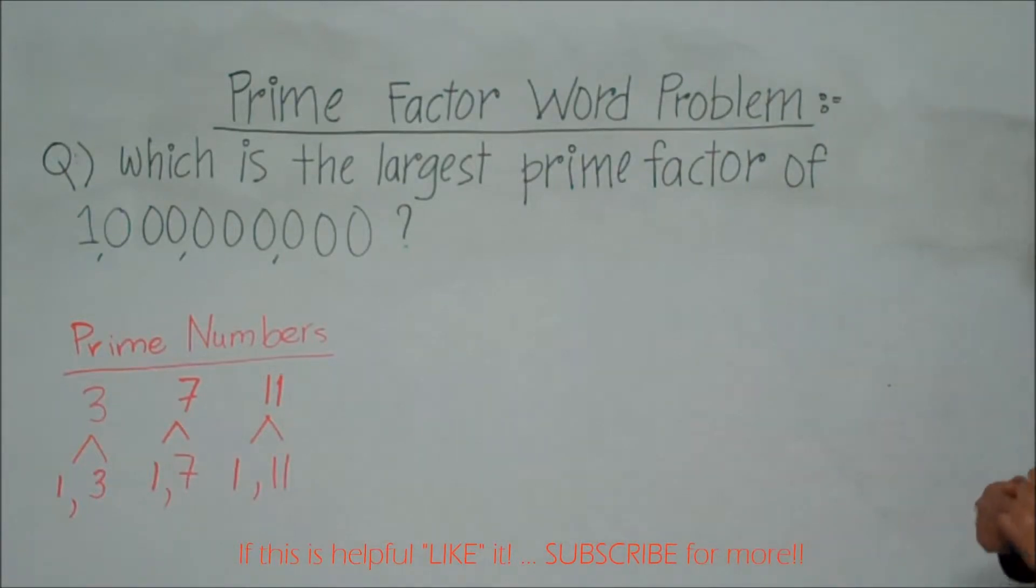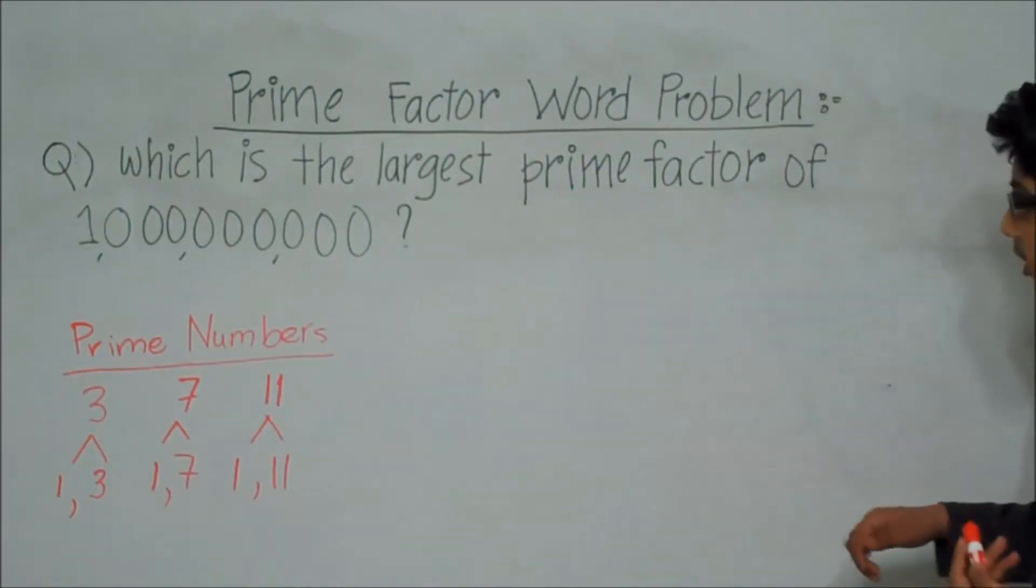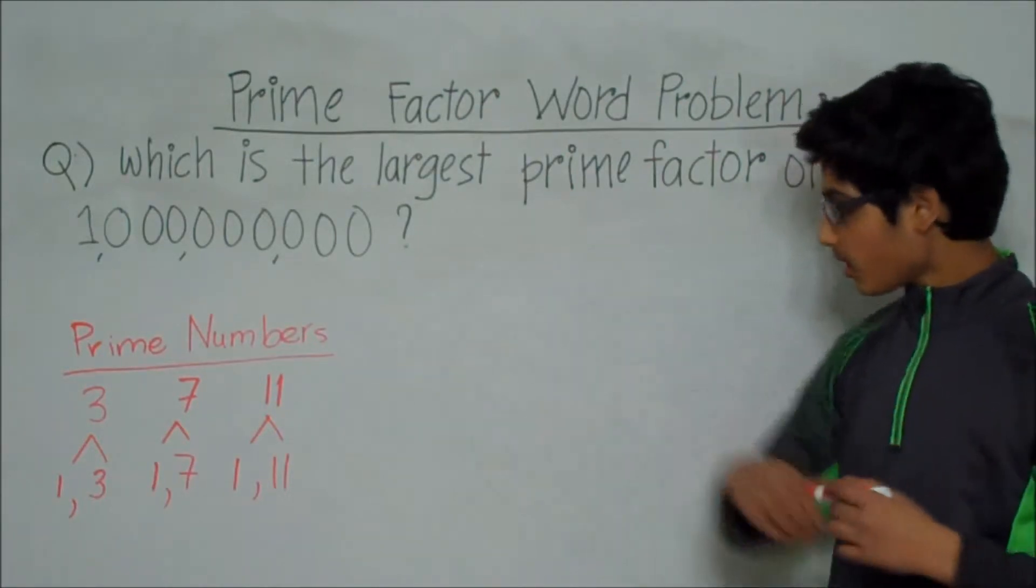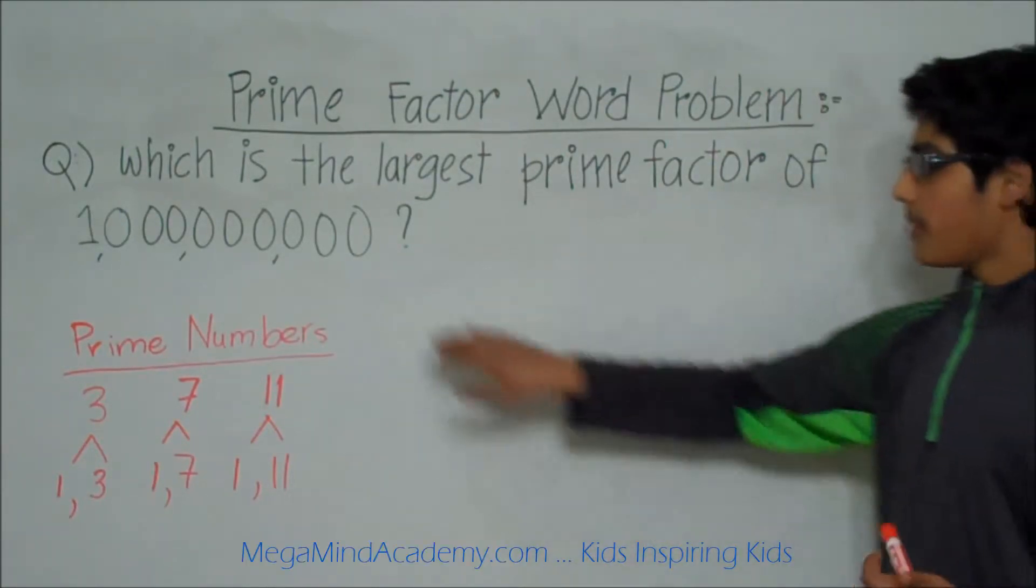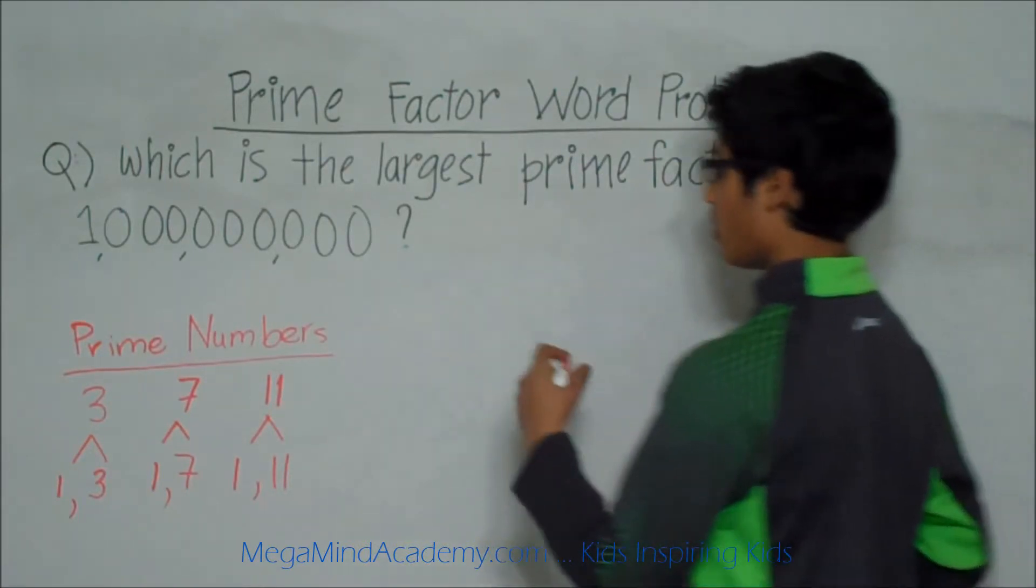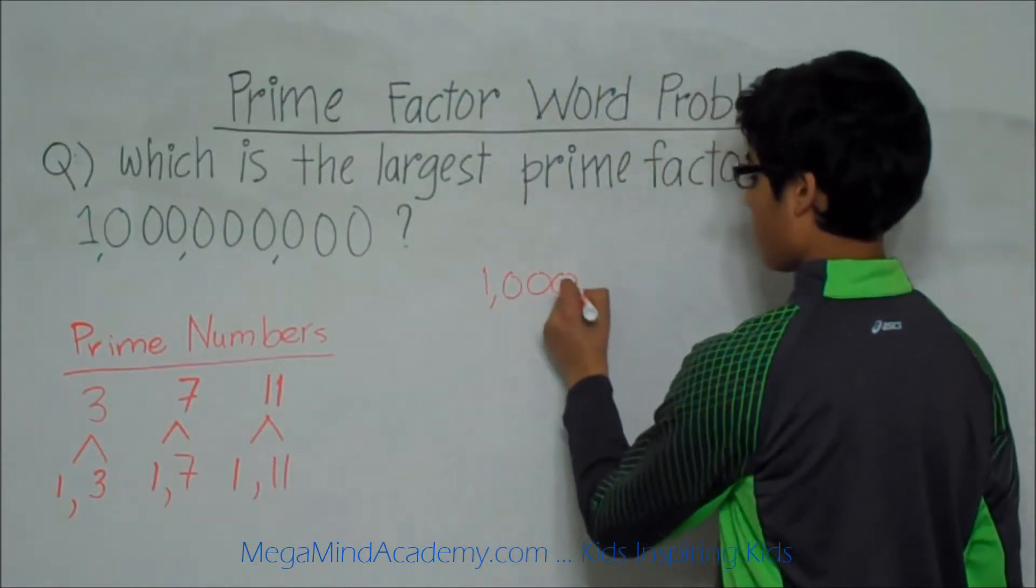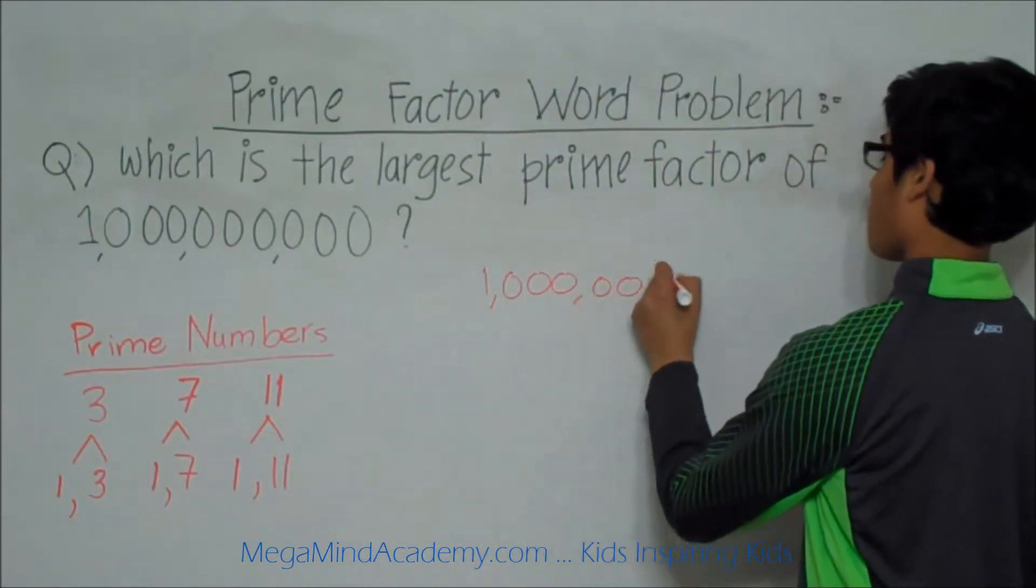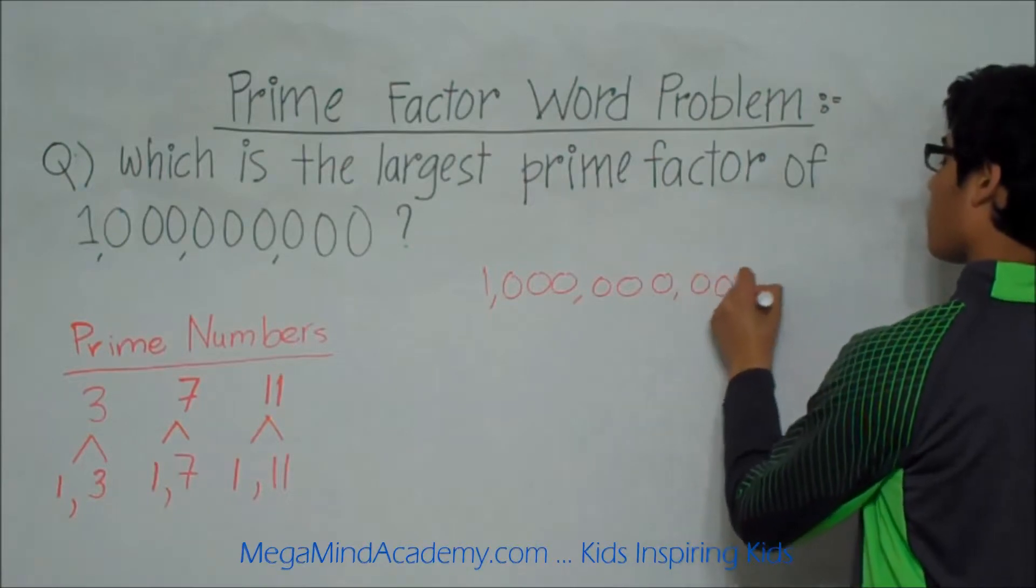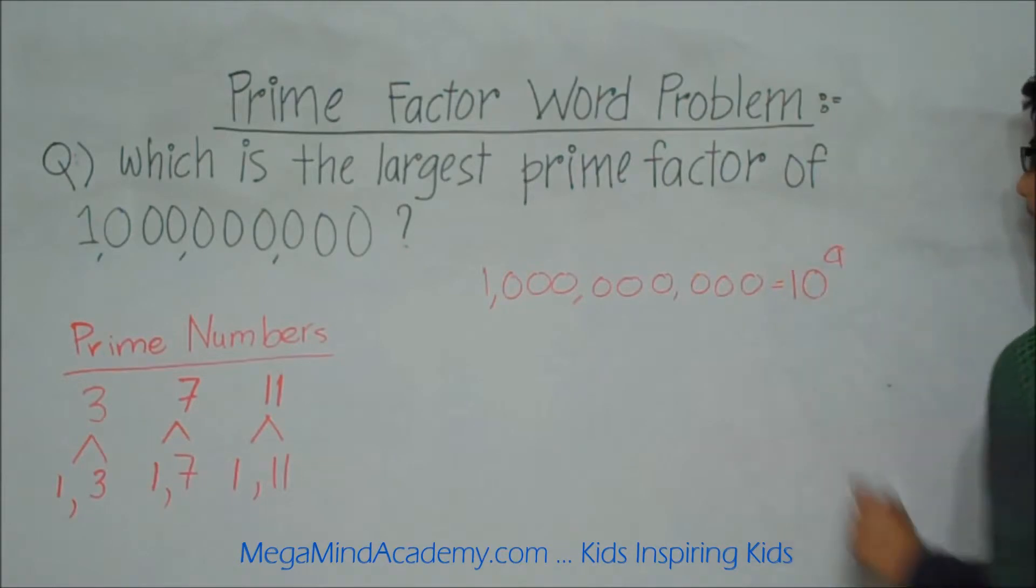Now we need to find out which is the largest prime factor of 1 billion. Let's write 1 billion as an exponent with a base of 10. 1 billion can be written as 10 to the 9th power.